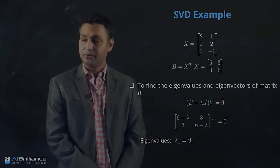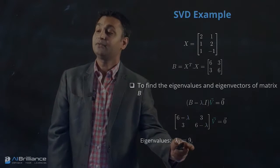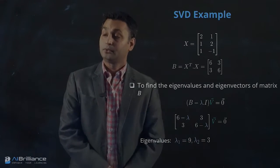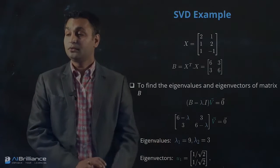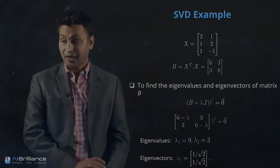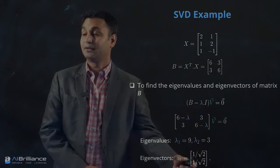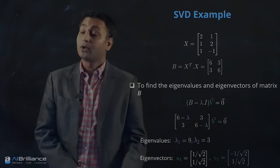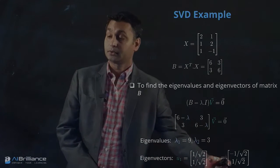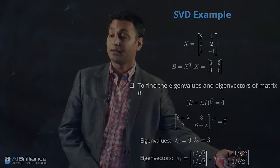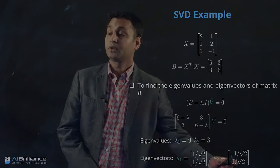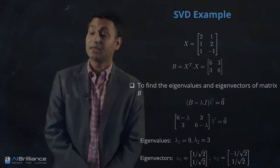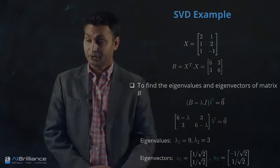If you find out the eigenvalues for matrix B, the eigenvalues will be lambda 1 equal to 9 and lambda 2 equal to 3. Corresponding to lambda 1, the eigenvector is given by this vector, and for lambda 2, the eigenvector is going to be negative 1 over root 2 and 1 over root 2. This is the second eigenvector associated with lambda 2.